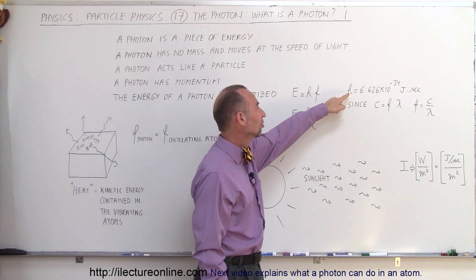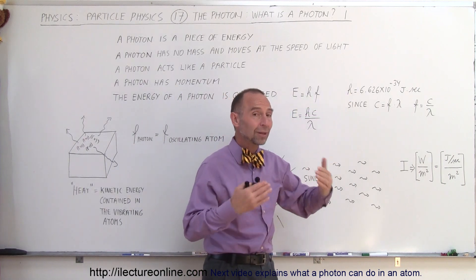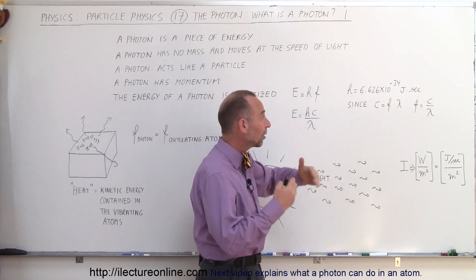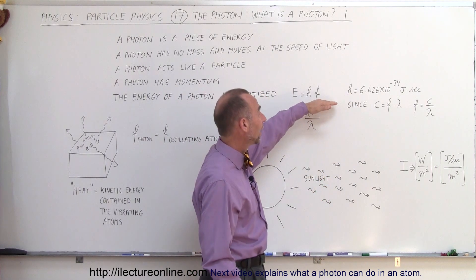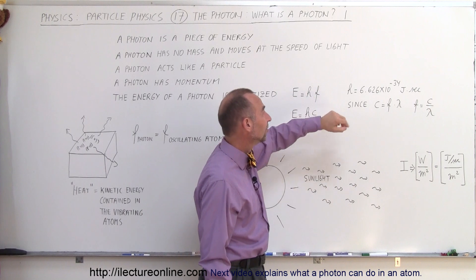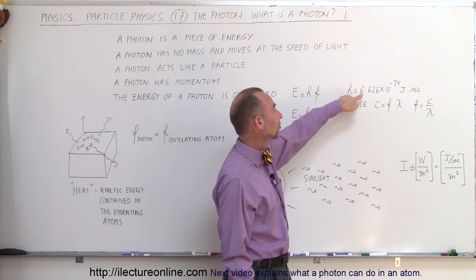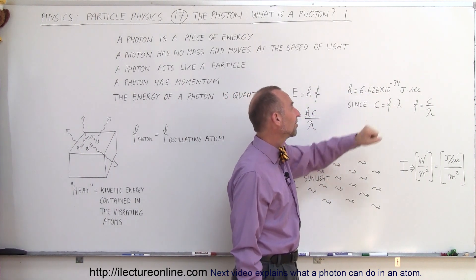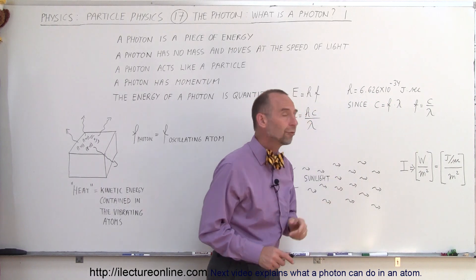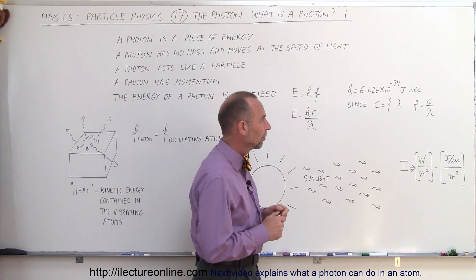H is a constant called Planck's constant, named after Planck because he did a lot of research on subatomic particles. The Planck constant H is equal to 6.626 times 10 to the minus 34 joules per second. That's a very small number.